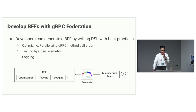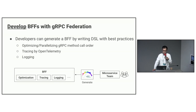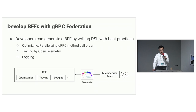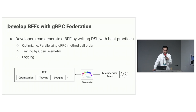For example, when you develop a BFF, you'd want to send requests to backend microservices as concurrently as possible. If you use zRPC Federation, it automatically analyzes dependencies between zRPC methods and makes the calls concurrently as much as it can. It also automatically sets up essential features for modern applications, such as distributed tracing using OpenTelemetry and logging.